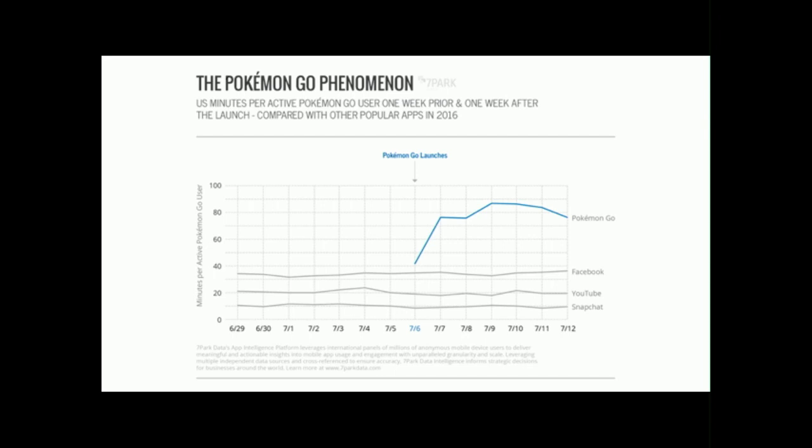At the moment Pokemon Go launched, people kept using Facebook, YouTube, and Snapchat. But you can see this massive uptick where people who used Pokemon Go were using it at a much higher rate than any of those other applications — which would have been a prime time for any of those applications to steal UI elements or interactions from Pokemon Go.